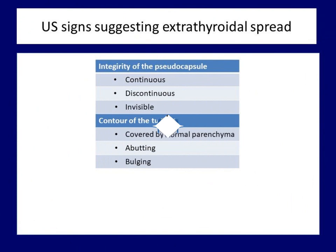So, what are the ultrasound signs of a possible extrathyroidal extension? Basically, we can examine two phenomena: the integrity of the thyroid capsule and the contour of the nodule. There are three possibilities regarding the capsule — it can be continuous, discontinuous, or invisible. Three types of contour exist: covered by normal parenchyma, abutting, or bulging.